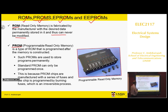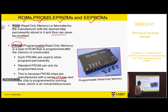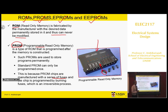With PROM, you burn those fusible links. Once you have burned them, it is permanent — you cannot erase them. That's why it's called programmable: you can program it, but once you have programmed it you cannot change it. Normally you use a programmer device; you put the chip in there and, through another computer, you write the data into it.